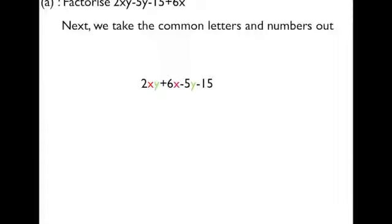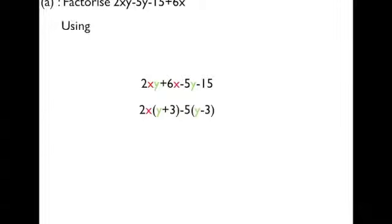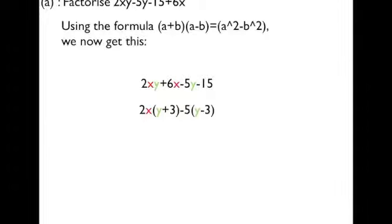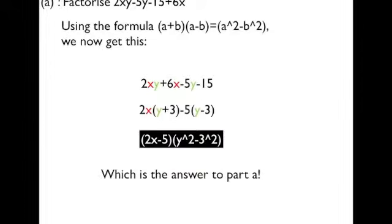Next, we take the common letters and numbers out and put them out of the brackets like this. Using the formula (a+b)(a-b) = a²-b², we now get this. Which is the answer to part A.